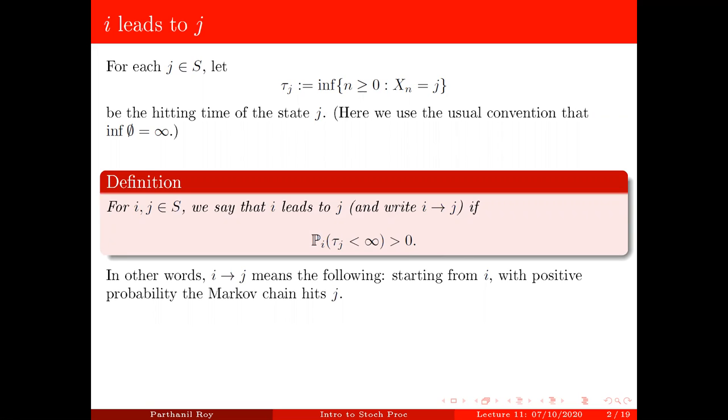Now i leads to j basically means that starting from i with positive probability the Markov chain hits j. So in other words, if you start the Markov chain from i, which is denoted by this probability pi here, it hits j within a finite amount of time with positive probability. So starting from i, tau j, the hitting time of j is less than infinity has positive probability. So this is the definition of i leads to j.